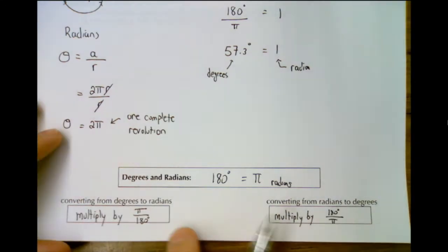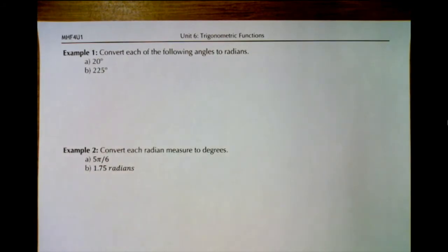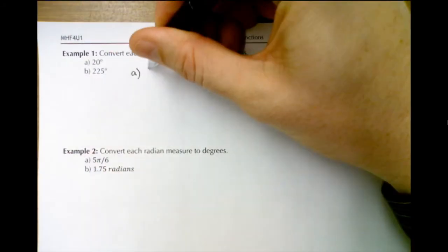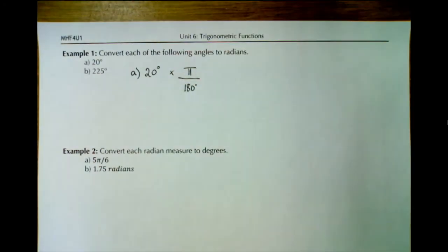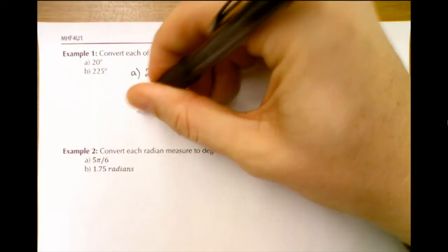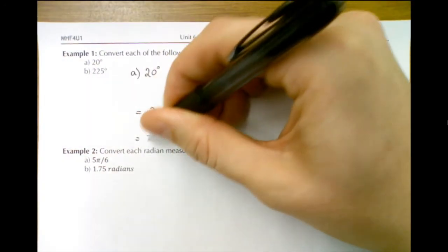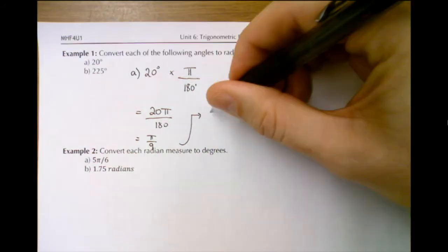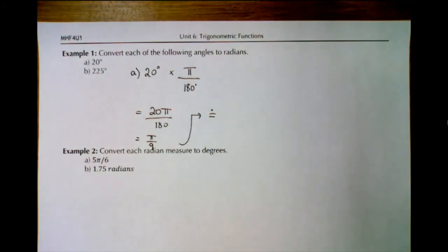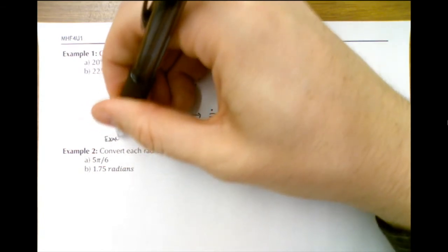Let's try a couple of conversions. Example a: convert 20 degrees to radians. We multiply 20 degrees by π over 180. That gives 20π over 180, which reduces by dividing top and bottom by 20, giving π over 9. That's the exact value. The approximate decimal value is π divided by 9, which is about 0.35. Usually we leave it as the exact answer.